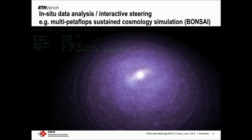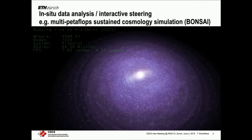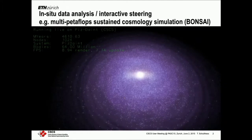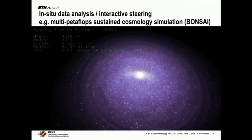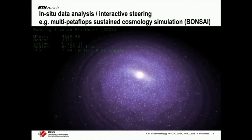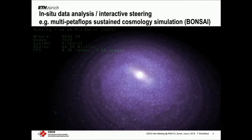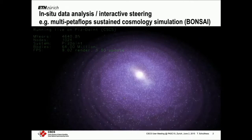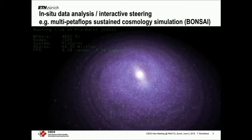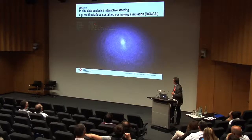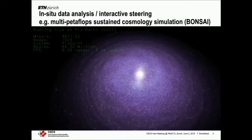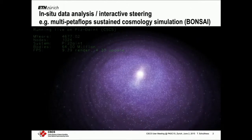This is a simulation of a galaxy — everybody in here recognizes this. It is the bonsai code, and it was one of the finalists of last year's Gordon Bell competition at Supercomputing. The relevance why I show this, apart from being a big application and good work being done on the machine on Pitstein: this is a movie that was taken during SC, while we were standing in New Orleans. The simulation was running at that time on a thousand nodes on Pitstein, and the rendering was happening on the same nodes.